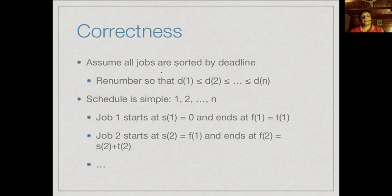To prove correctness, we first assume that we have numbered all jobs in order of deadline: jobs 1, 2, 3 up to n so that d(1) ≤ d(2) ≤ ... ≤ d(n). Having done this, our schedule is straightforward — we schedule job 1 first, then job 2, then job 3, and so on. Job 1 starts at time 0 (s(1)=0), ends at f(1)=t(1).